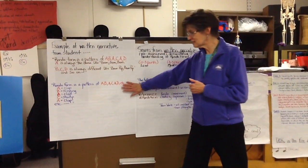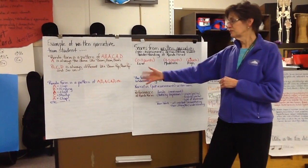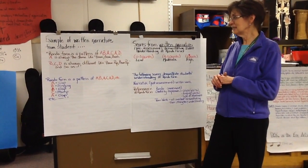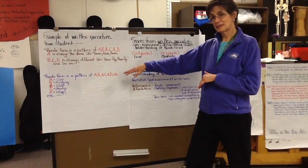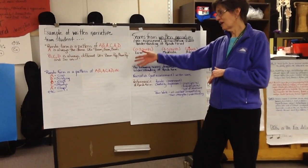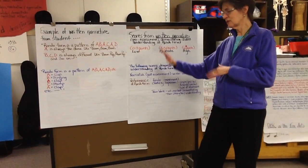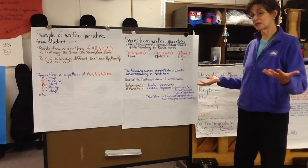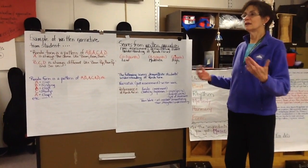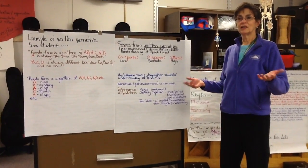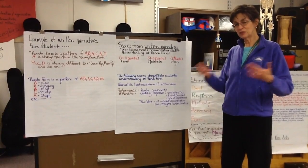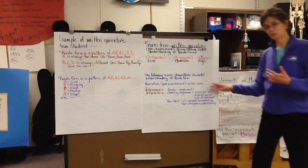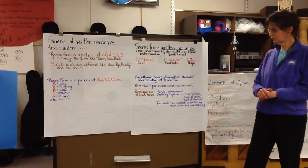Here's another student's example: 'Rondo form is a pattern of A, B, A, C, A, D. A — clap. B — singing. A — clap. C — stomp. A — clap, et cetera.' Some people were great at articulating, while others struggled — they could tell me but couldn't write it down. That's why I tried to balance their scoring by including the performance component.